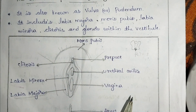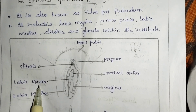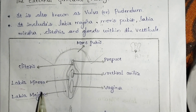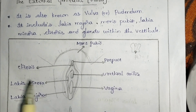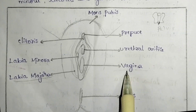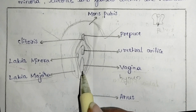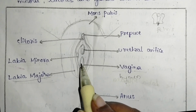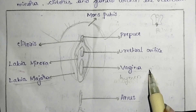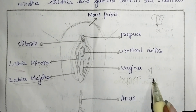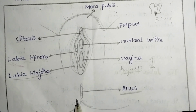Both labia minora and labia majora consist of sweat glands. Labia majora has fat deposits and hair follicles; labia minora doesn't have fat deposits or hair follicles. In the vagina, we can see a structure called the hymen, which is a ring-like structure inside the vagina — a very thin layer — that gets torn at the time of first sexual intercourse. The anus is the opening of the large intestine. This covers external genitalia.